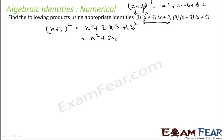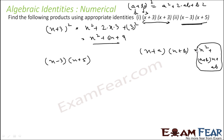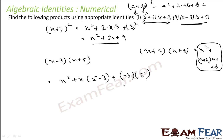Solving: x² + 6x + 9. Next, (x−3)(x+5) — this matches the (x+a)(x+b) identity, giving x² + (a+b)x + ab. So this becomes x² + (5−3)x + (−3×5) = x² + 2x − 15. Directly using algebraic identities we get the answers.